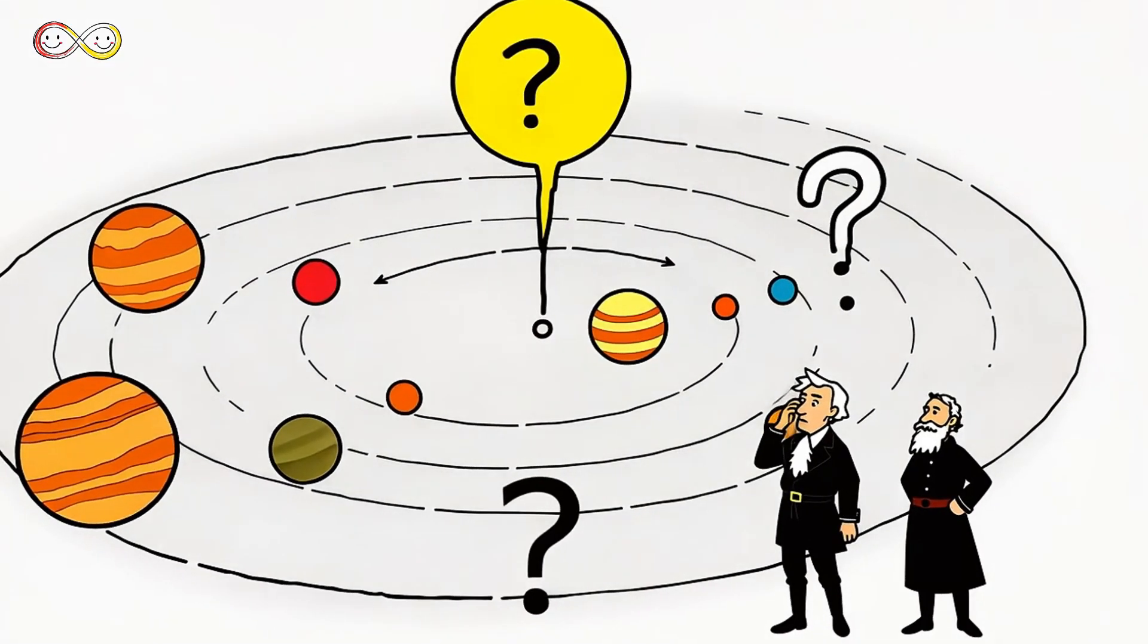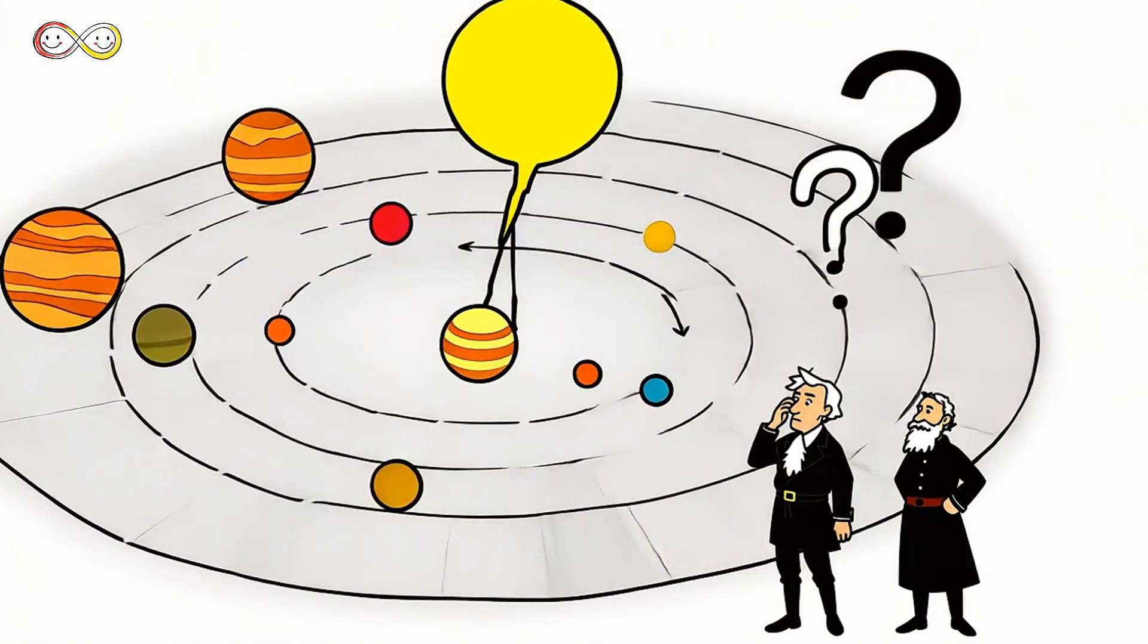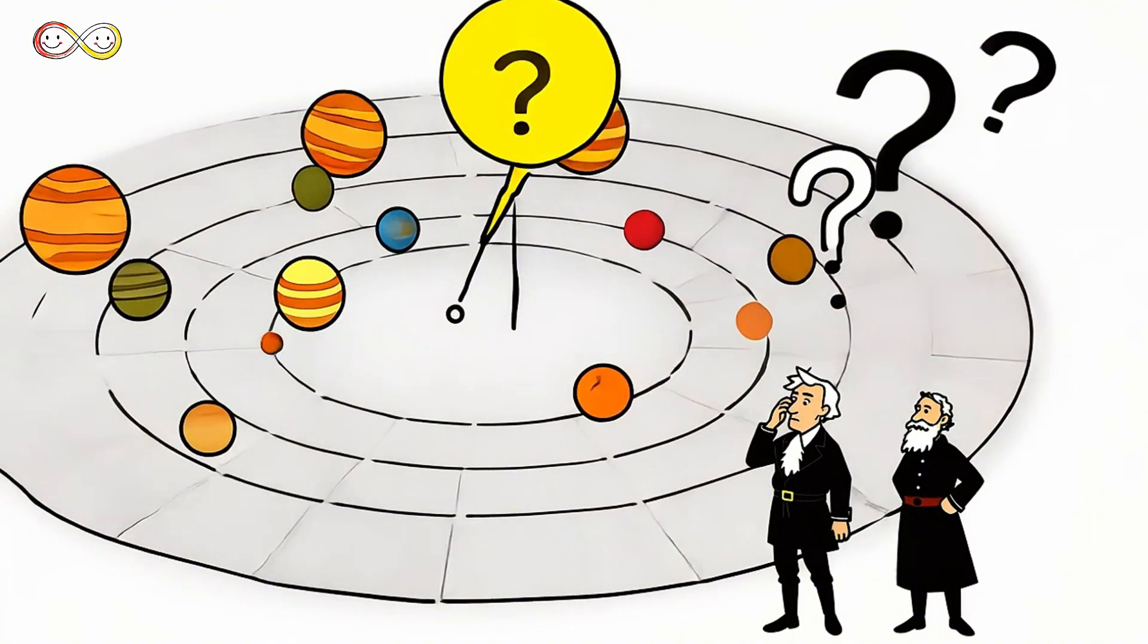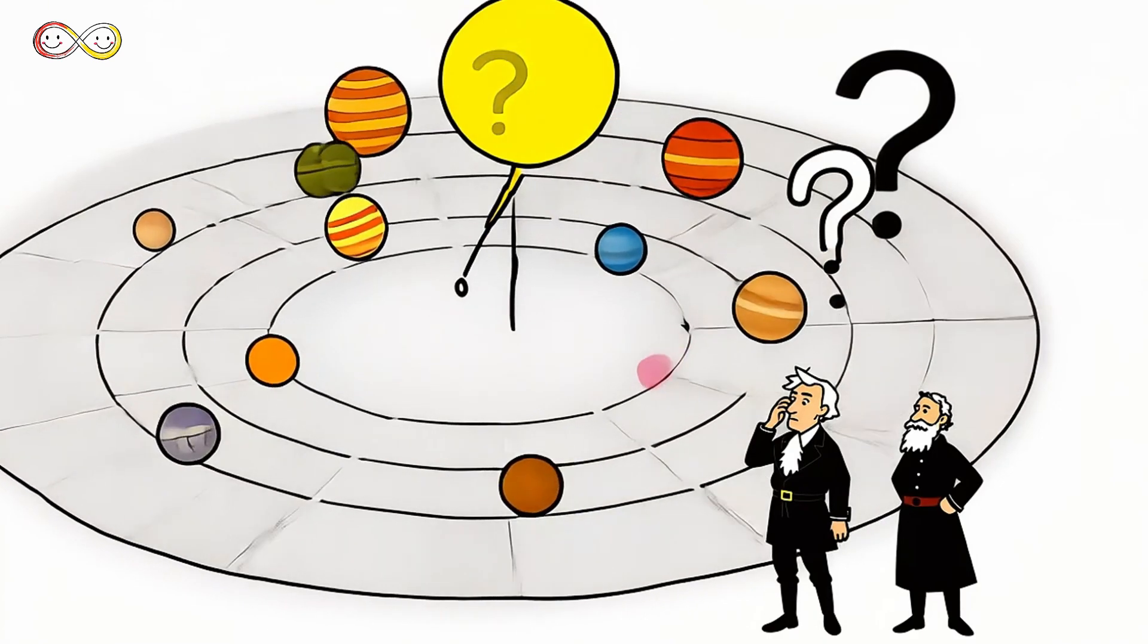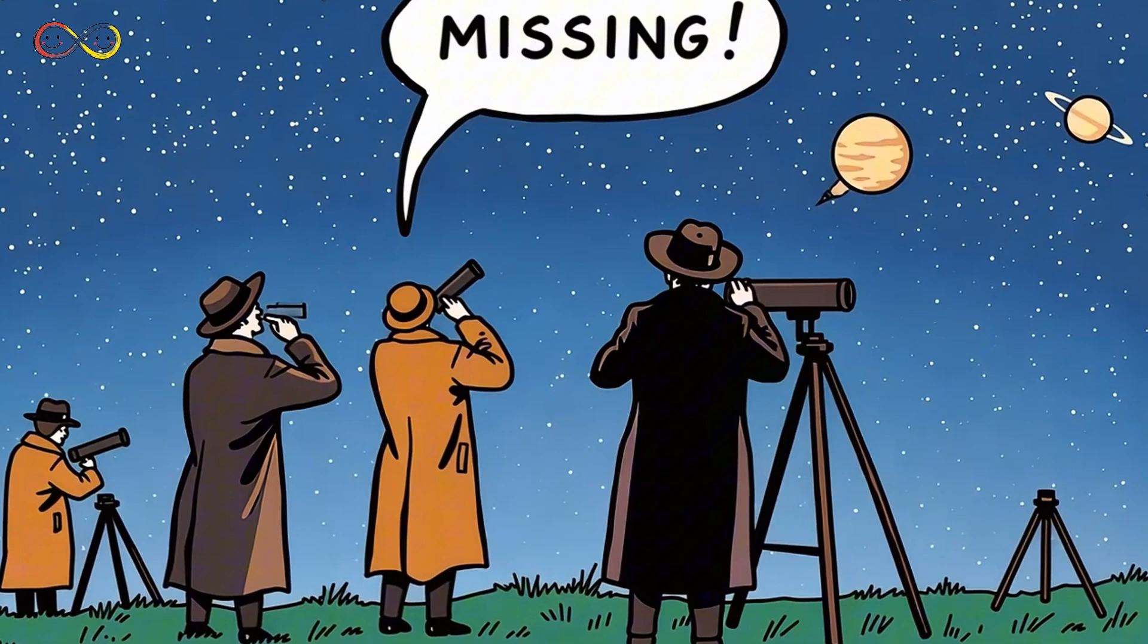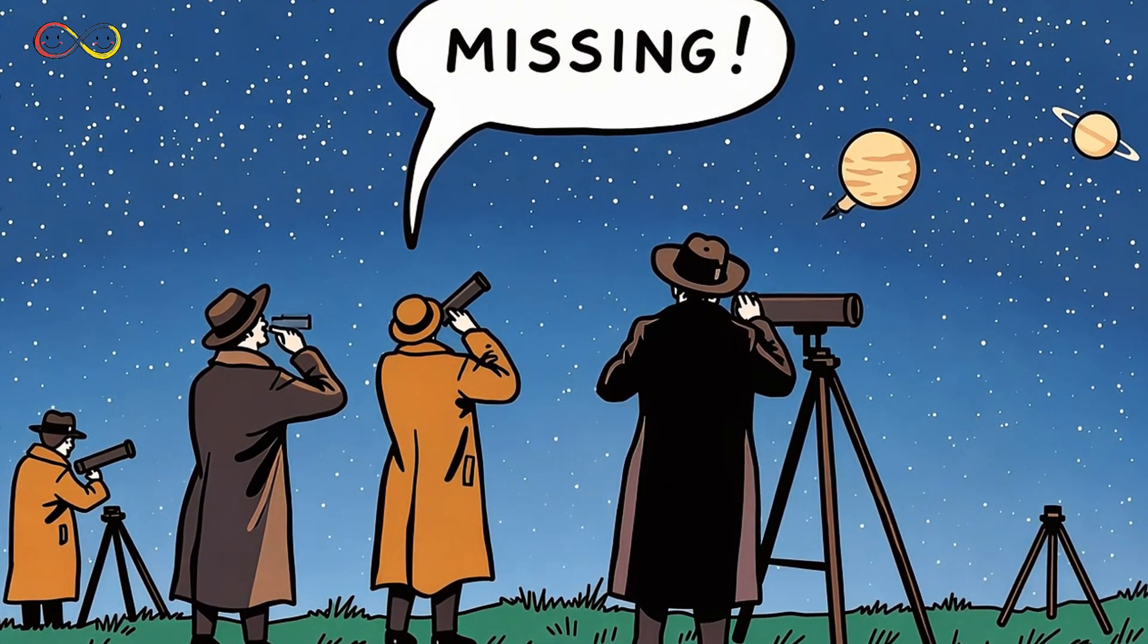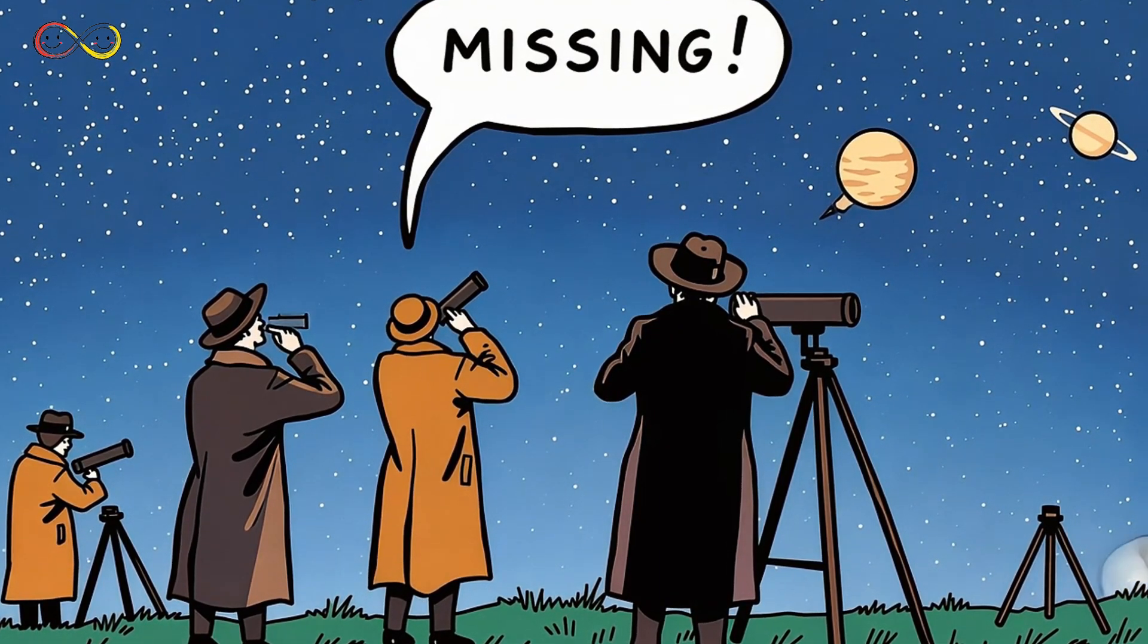Long ago, scientists noticed something odd. Two astronomers, Titus and Bode, found a strange pattern in the way planets were spaced in the solar system. According to their calculations, there should be a planet between Mars and Jupiter. But when they looked, there was nothing there. Just empty space. This mystery fascinated astronomers. Scientists decided to start searching for this missing planet, hoping to solve the puzzle of the empty gap.